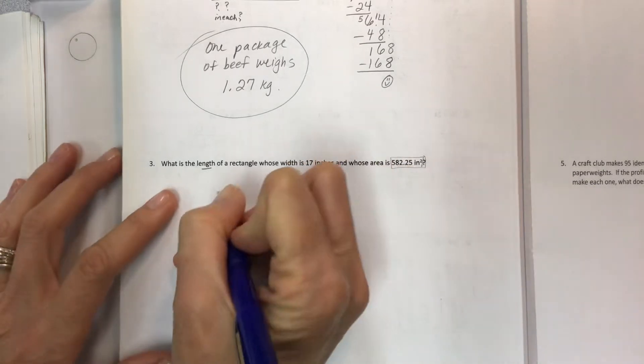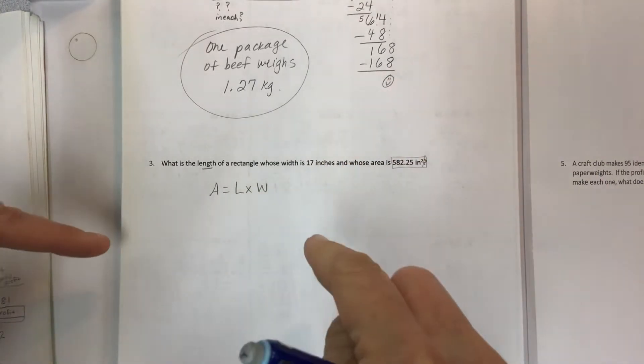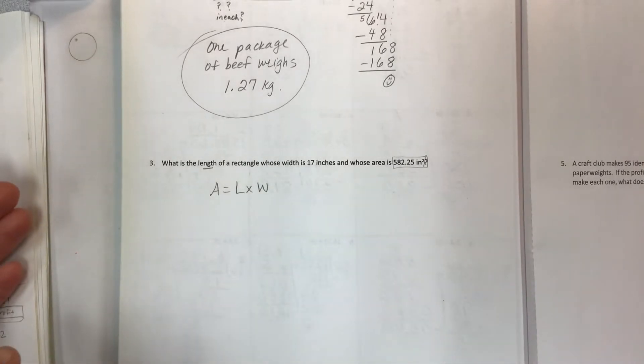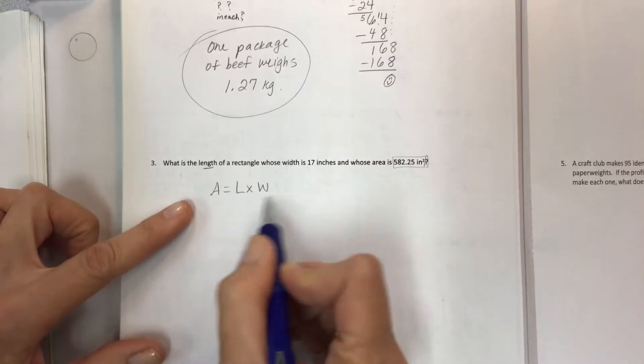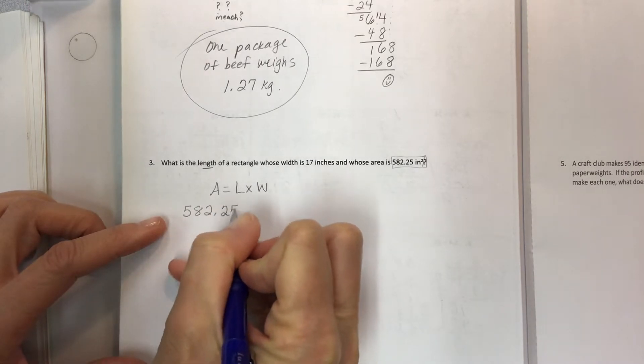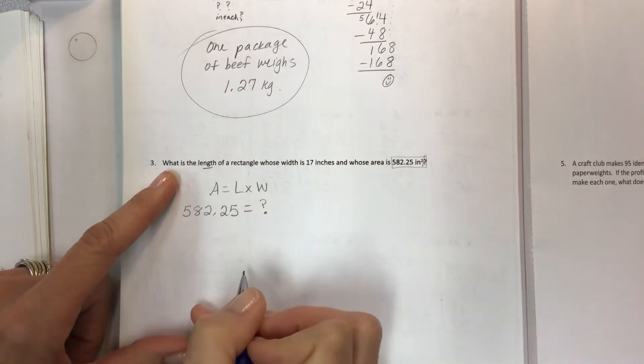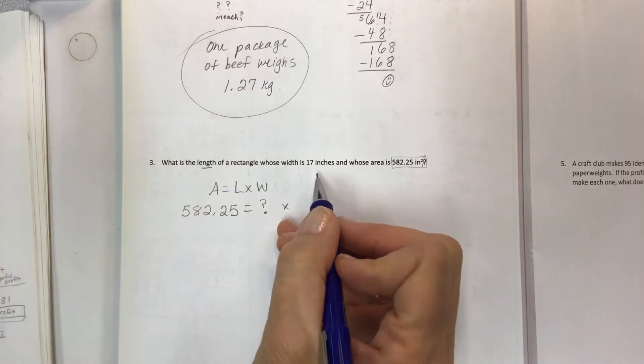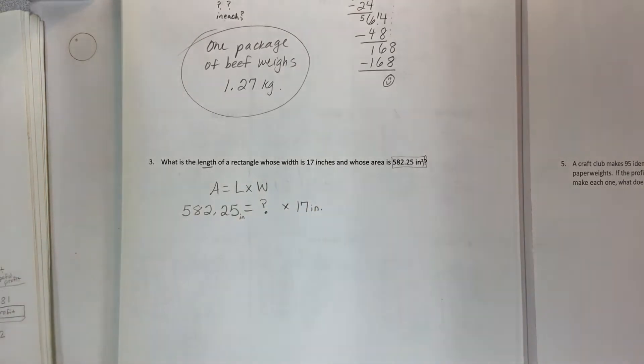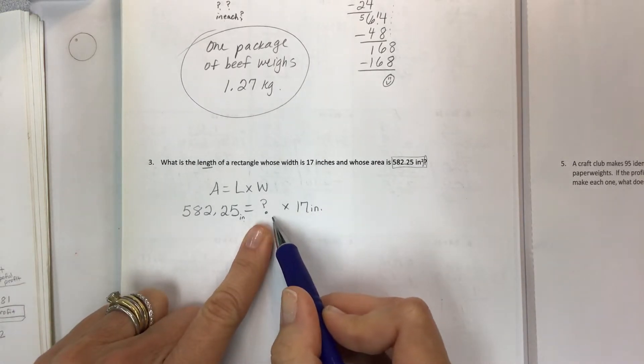What is the length of a rectangle whose width is 17 inches and whose area is 582 and 25 hundredths inches squared? Remember that the formula for area is length times width. We plug in 582.25 equals length times 17.